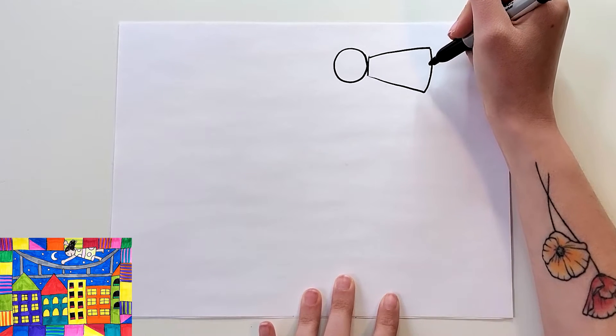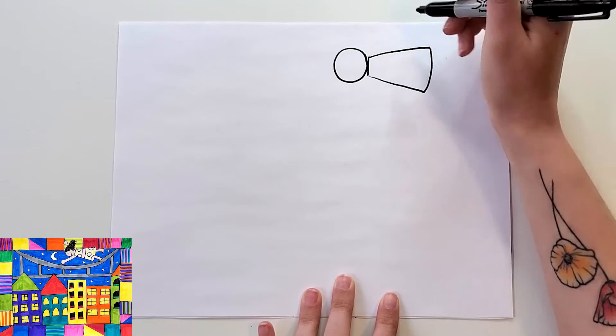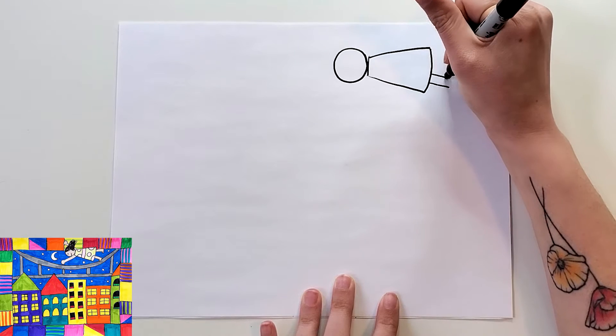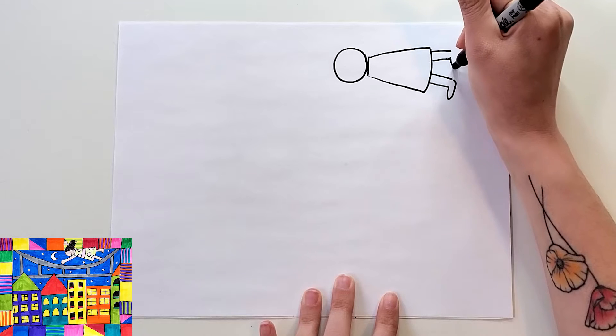Now if you wanted to do pants instead you could do a small rectangle and then two rectangles for the pant legs, but I did like this. And then two lines for each leg with a little oval for the foot.